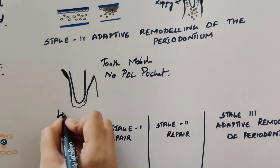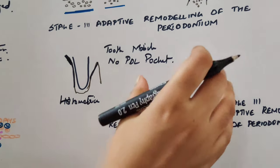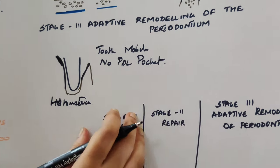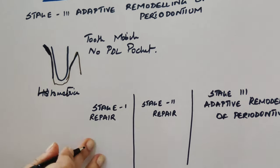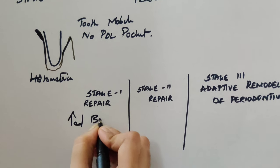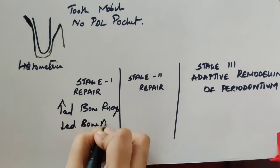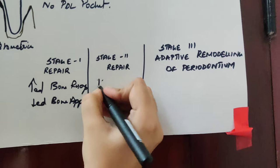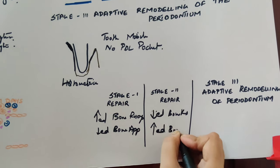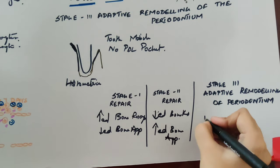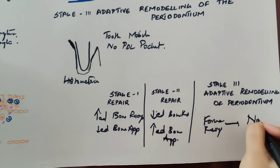Finally, reviewing the stages histometrically in terms of bone formation and resorption: in Stage 1 (injury), there was a lot of bone resorption with less bone apposition. In Stage 2 (repair), bone resorption decreased while bone apposition increased. In Stage 3 (adaptive remodeling), both formation and resorption returned to normal levels.